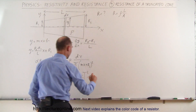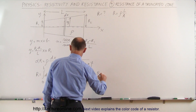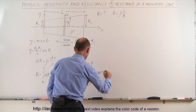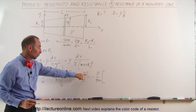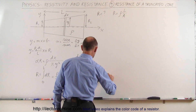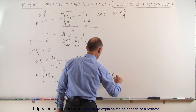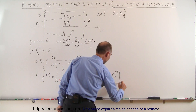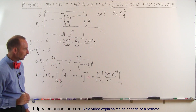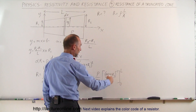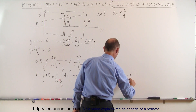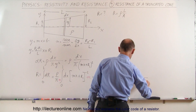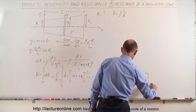I can now go ahead and integrate this. This is equal to rho divided by pi times m, times the quantity. Integrating gives me the old exponent plus one divided by the new exponent, so this would be (mx plus R1) raised to the minus 1 power, divided by the new exponent, evaluated from 0 to L. That means I'm going to put the negative out front and write this as: negative rho over (pi times m) times the quantity 1 over (mx plus R1), from 0 to L.